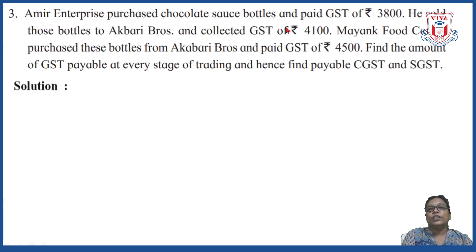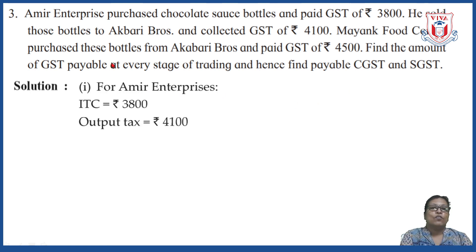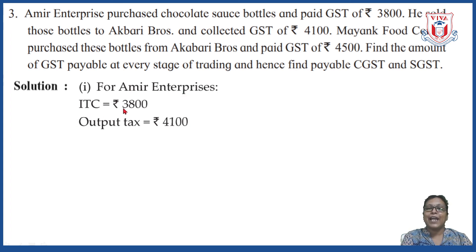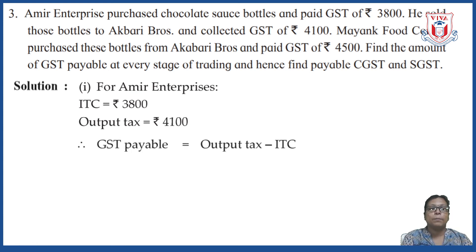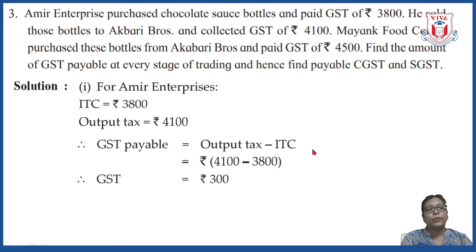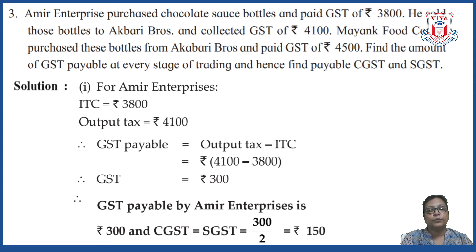For Amir Enterprises: ITC equals rupees 3,800 (paid at time of purchase) and output tax equals rupees 4,100. Applying the formula: GST payable equals output tax minus ITC, so 4,100 minus 3,800 equals rupees 300.